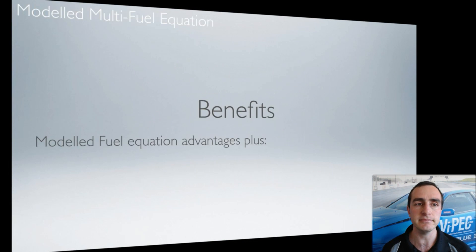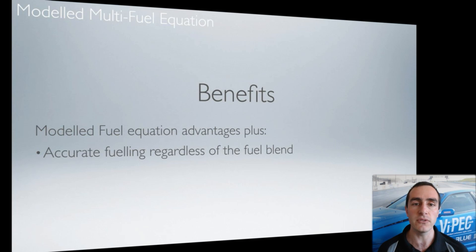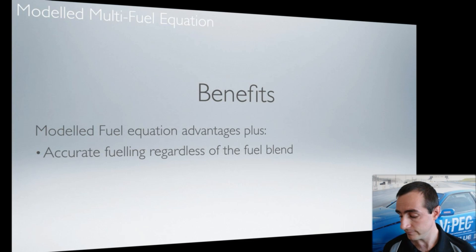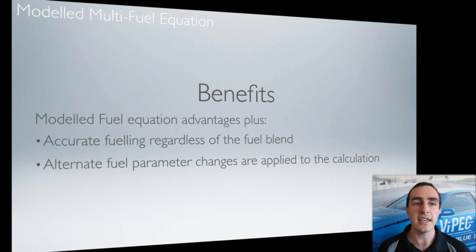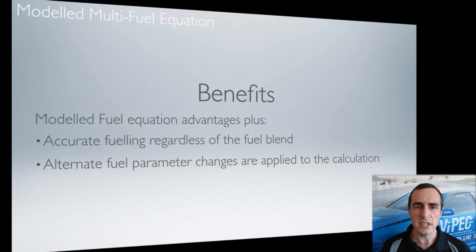The modelled multi-fuel equation takes on all of the benefits of the modelled fuel equation we talked about earlier, but it adds more as well. The first benefit is accurate fueling regardless of the current fuel blend. So long as the ECU knows what the current fuel blend is, it's going to choose the correct amount of fueling regardless of the percentage of ethanol or petrol. It also takes advantage of knowing fuel parameters for the secondary fuel — things like injector flow characteristics and stoichiometric ratio. This is something many other ECUs don't do; normally they just use a fudge multiplier on top of the normal petrol values.